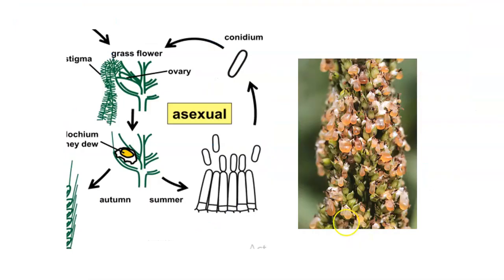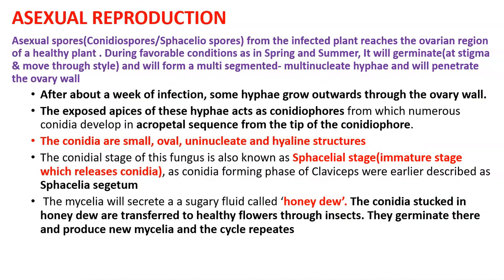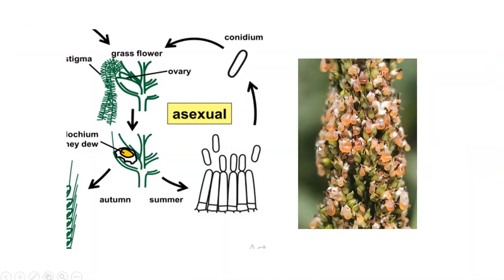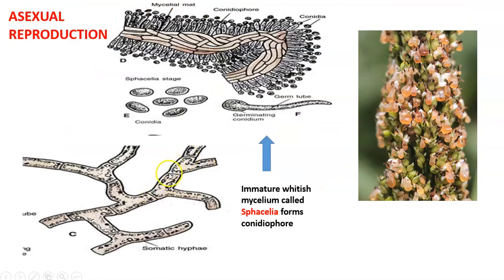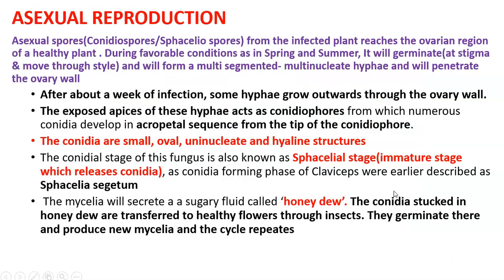To recap: conidia infect the rye flower, a honey-like substance exudes trapping millions of conidia, ants carry them to other flowers where soft mycelial tissue forms again, then conidiophores and conidia, continuing the cycle. Importantly, conidia are small, oval, uni-nucleate, and hyaline structures. Although the mycelium is multi-nucleate, only one nucleus reaches each conidium through the conidiophore — so conidia are oval and uni-nucleate. That detail must be kept in mind.